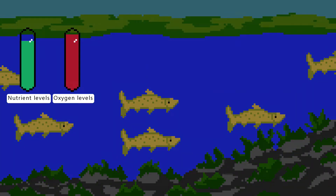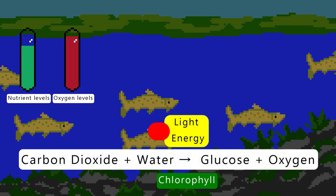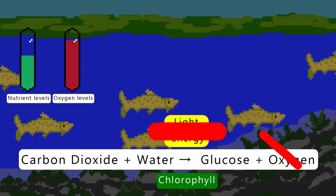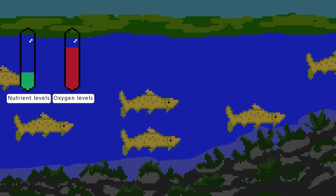The algae specifically creates a layer on the surface which blocks the light from reaching underwater. Plants that live underwater can no longer photosynthesise effectively and start to die, and therefore they are not releasing oxygen into the water. This is just the beginning of the dissolved oxygen levels dropping in the water.